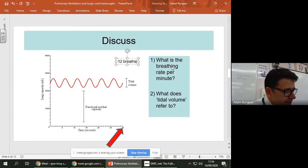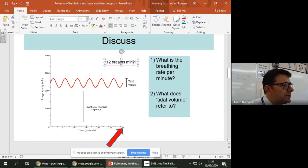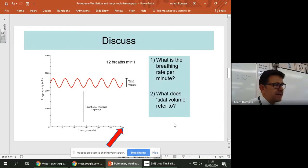So 12 breaths, and it's min minus one, and that would be superscript. So that's per minute. Oh, I can't do it. Home. Superscript. There you go, that's correct.